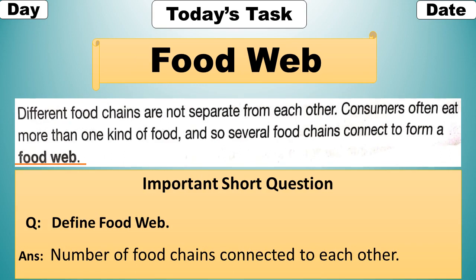Food web: different food chains are not separate from each other. Consumers often eat more than one kind of food, and so several food chains connect to form a food web. Here is an important short question for you: define food web — a number of food chains connected to each other.